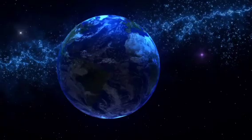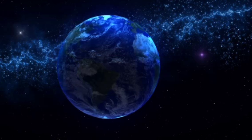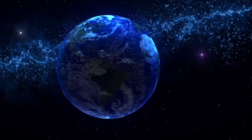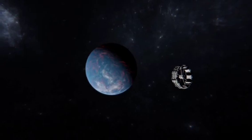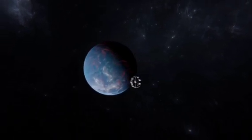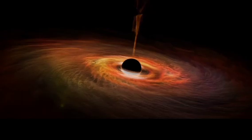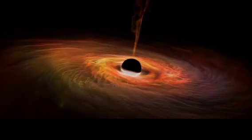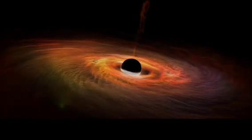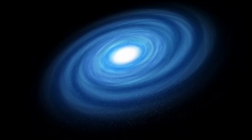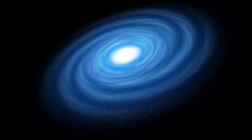In recent years, astronomers have identified thousands of exoplanets orbiting distant stars. Many of these planets exist within the habitable zone, the region around a star where conditions might be right for liquid water and potentially life to exist. Some of these planets are Earth-like in size and composition, while others are gas giants or icy worlds with subsurface oceans. The sheer number of these planets, estimated to be in the billions within our own galaxy, suggests that the conditions for life may not be as rare as once thought.